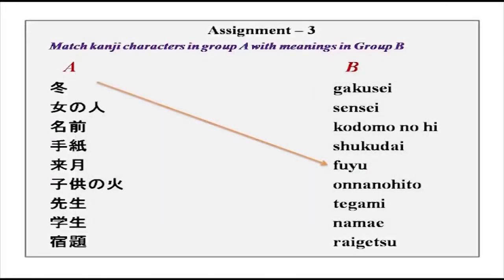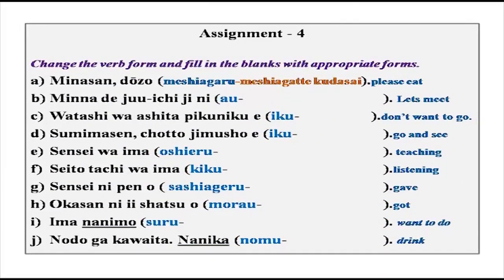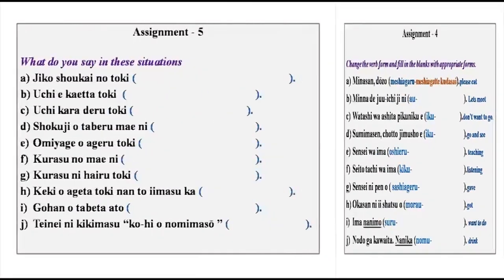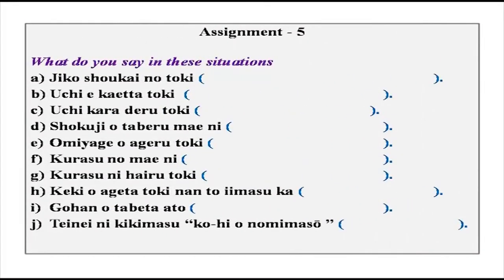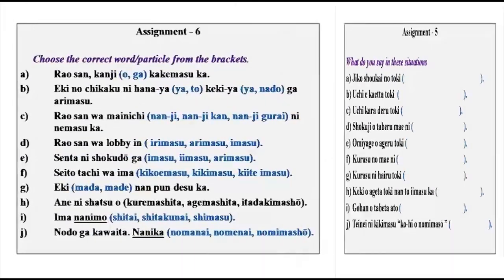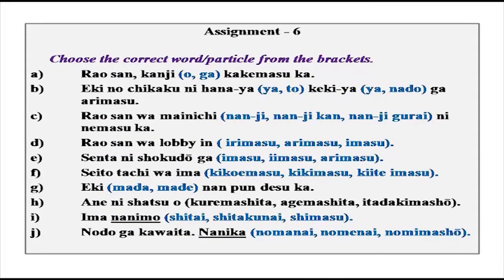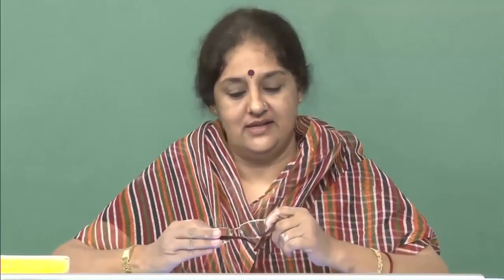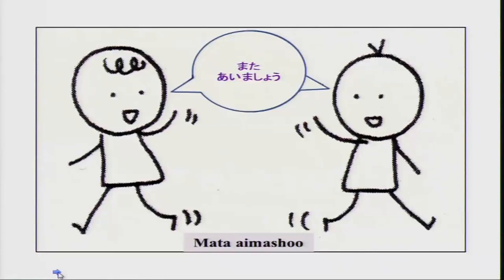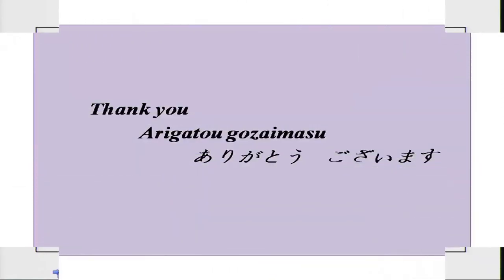You have your assignments now: match the kanji characters with meanings, change verb forms using the clues given, practice your expressions in given situations, and choose the correct words and particles from brackets. Go home, study hard, practice with your partner and we will learn something new in our next lesson. Minasan, mata ashita aimashou. Arigatou gozaimasu. Thank you.